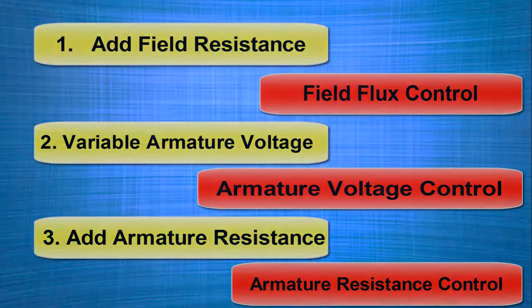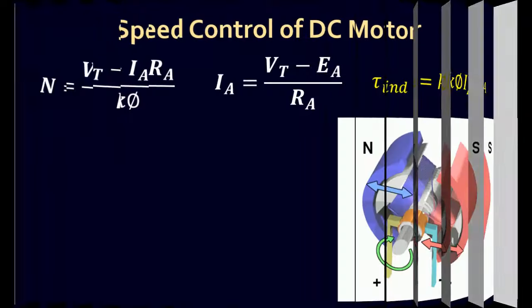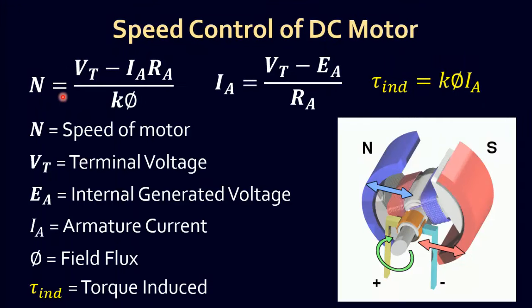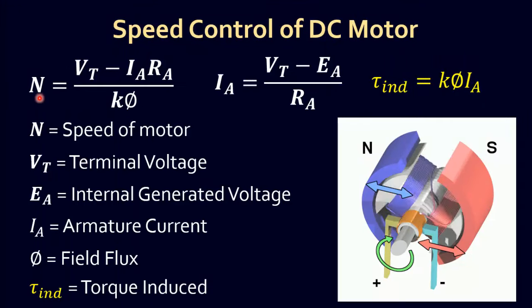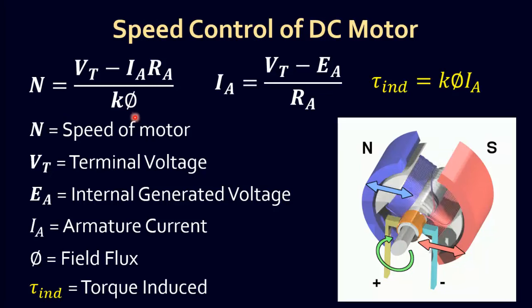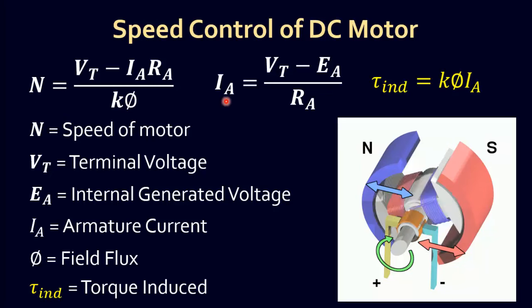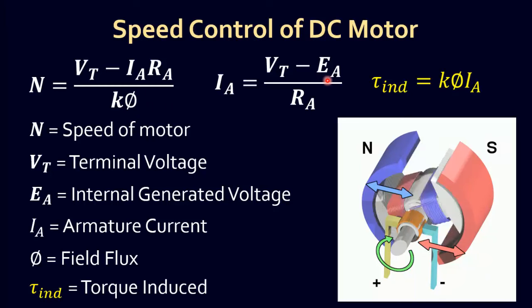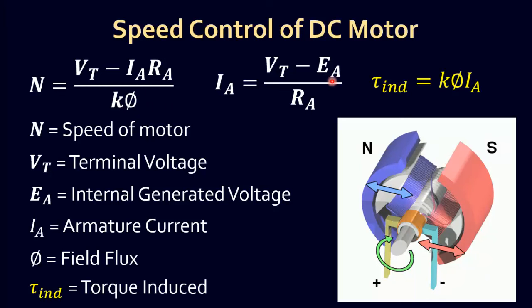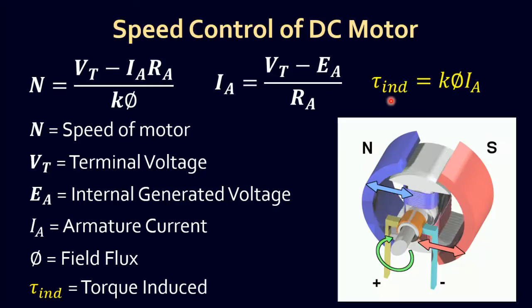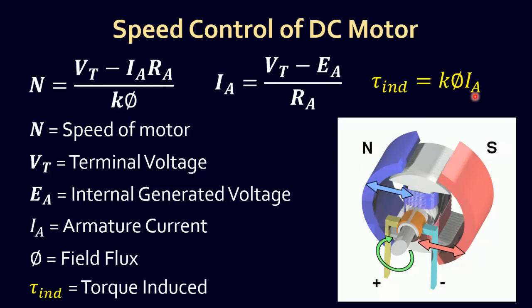To understand all three speed control methods, we must know these three equations. The first equation is the relation of motor speed with terminal voltage and field flux. The second equation is the relation of armature current with internal generated voltage or back EMF. The last equation is the relation of induced torque with field flux and armature current.